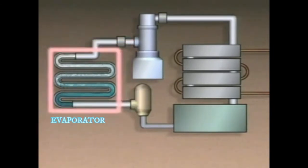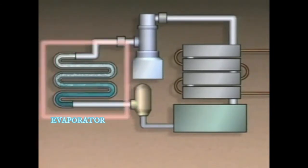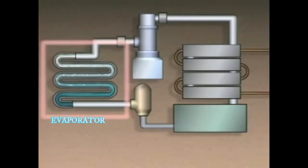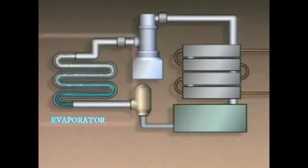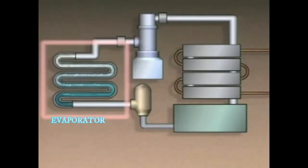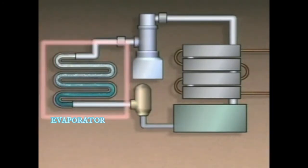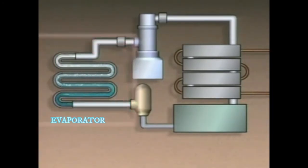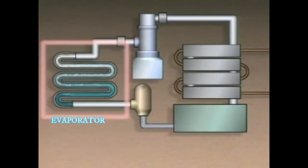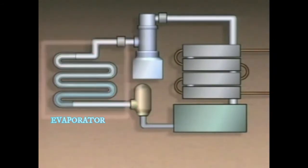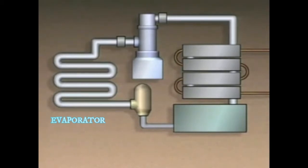The evaporator draws heat from its immediate surroundings. This heat is transferred to the refrigerant because the temperature of the refrigerant is lower than the temperature of the evaporator surroundings. To move the refrigerant through the cycle, energy must be added to it.